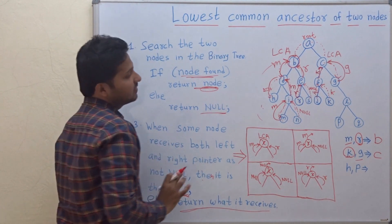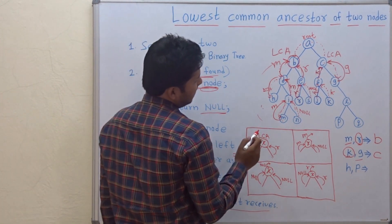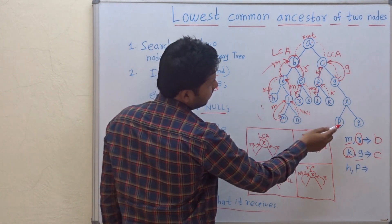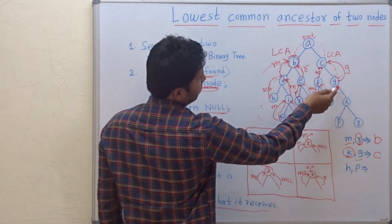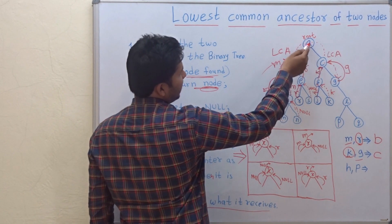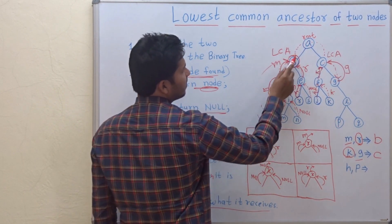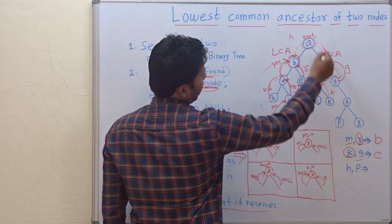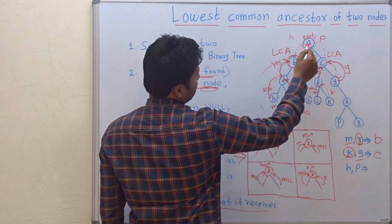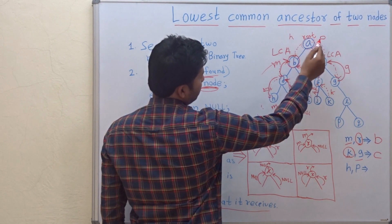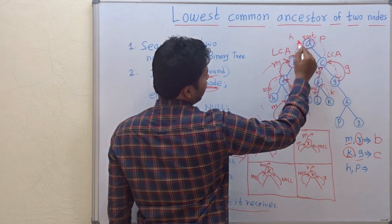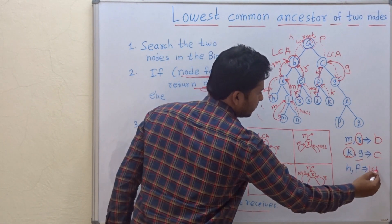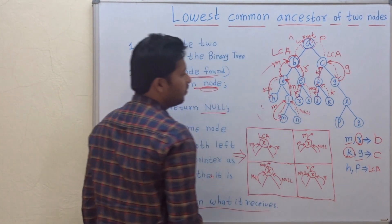A similar case for H and P. They will return up to A. H will return up to A and for A it will receive H and P. So A is the LCA for H and P.